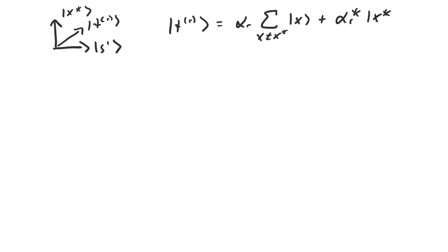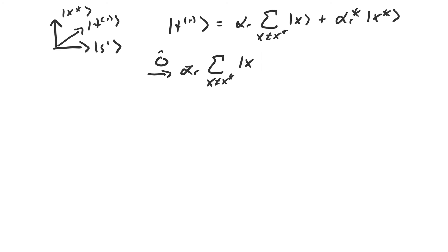Let's look at what happens to these amplitudes as we apply the subroutine. The first step is applying the oracle, and it's pretty easy to see what that does: it negates the coefficient in front of x-star and leaves all other coefficients unchanged.